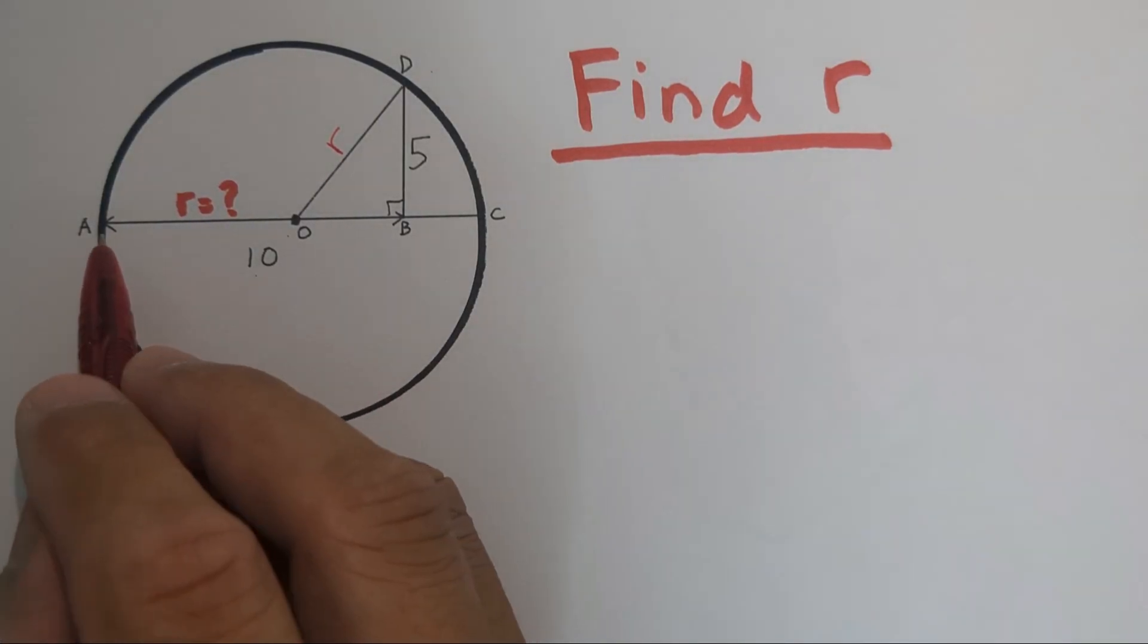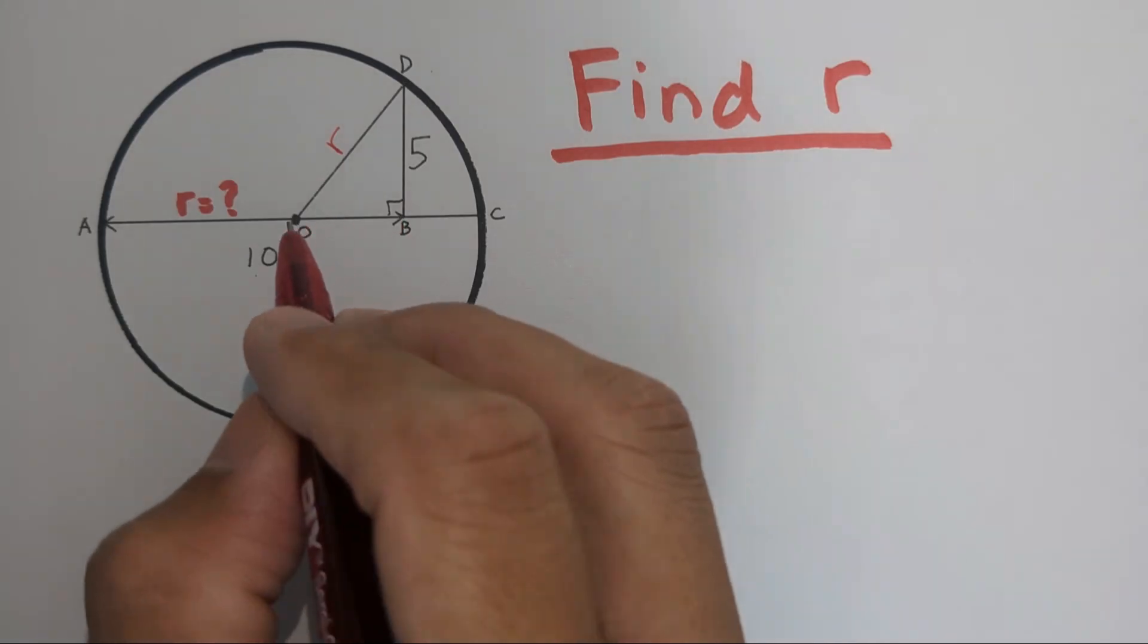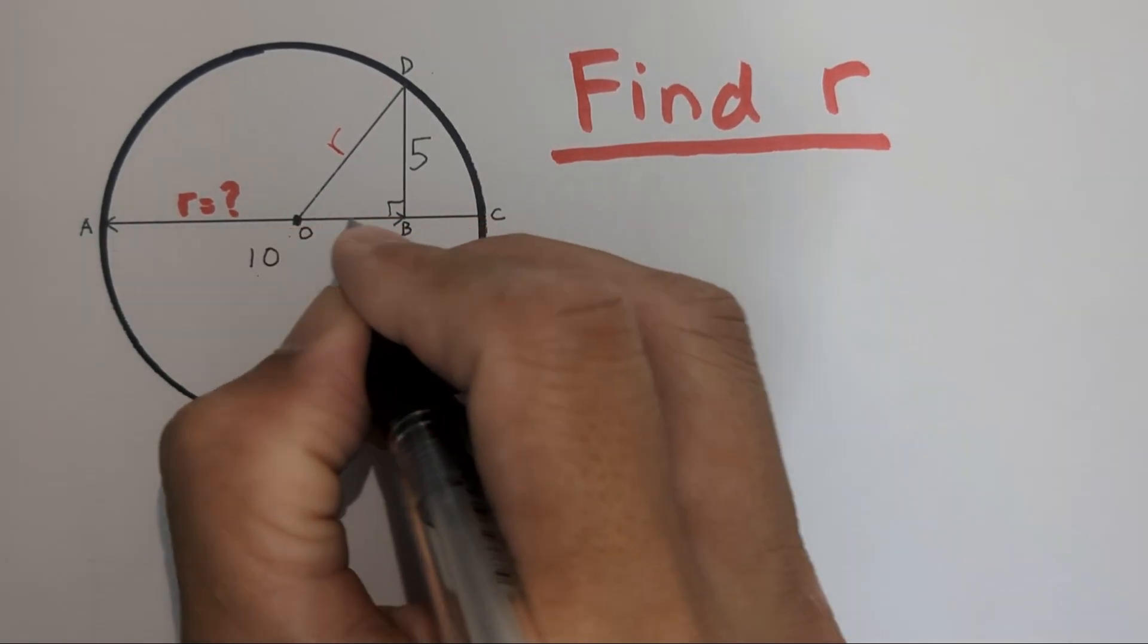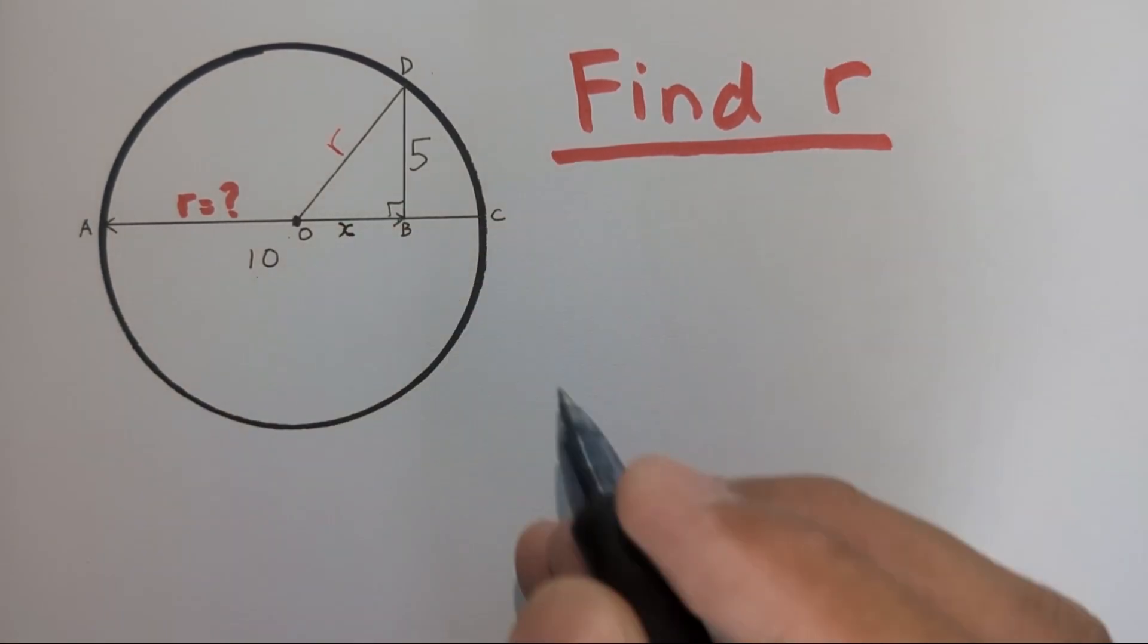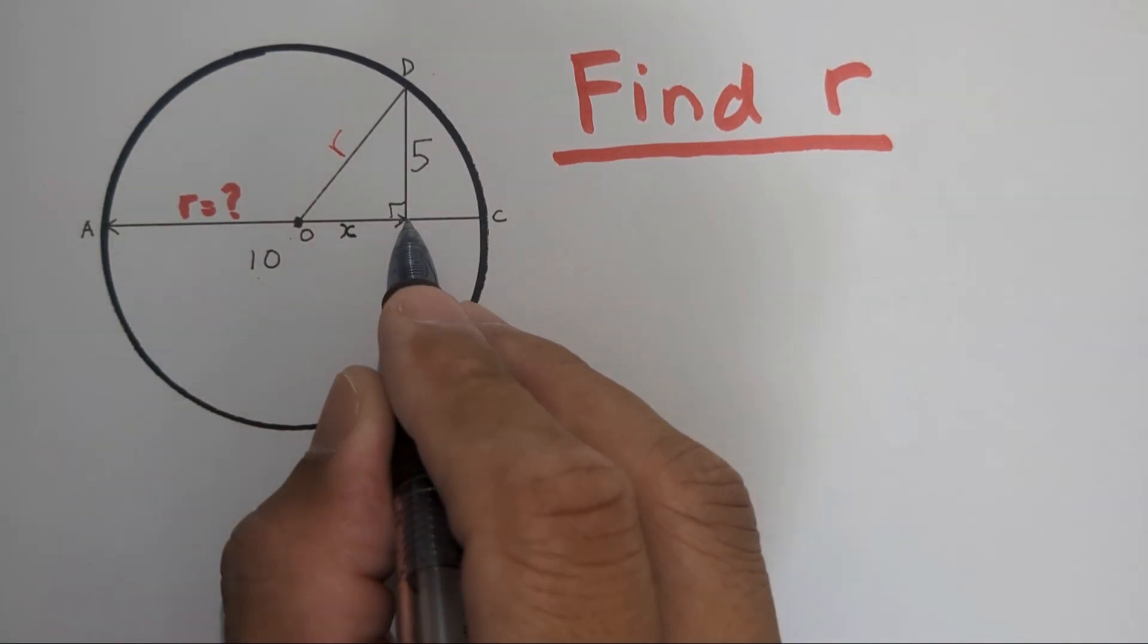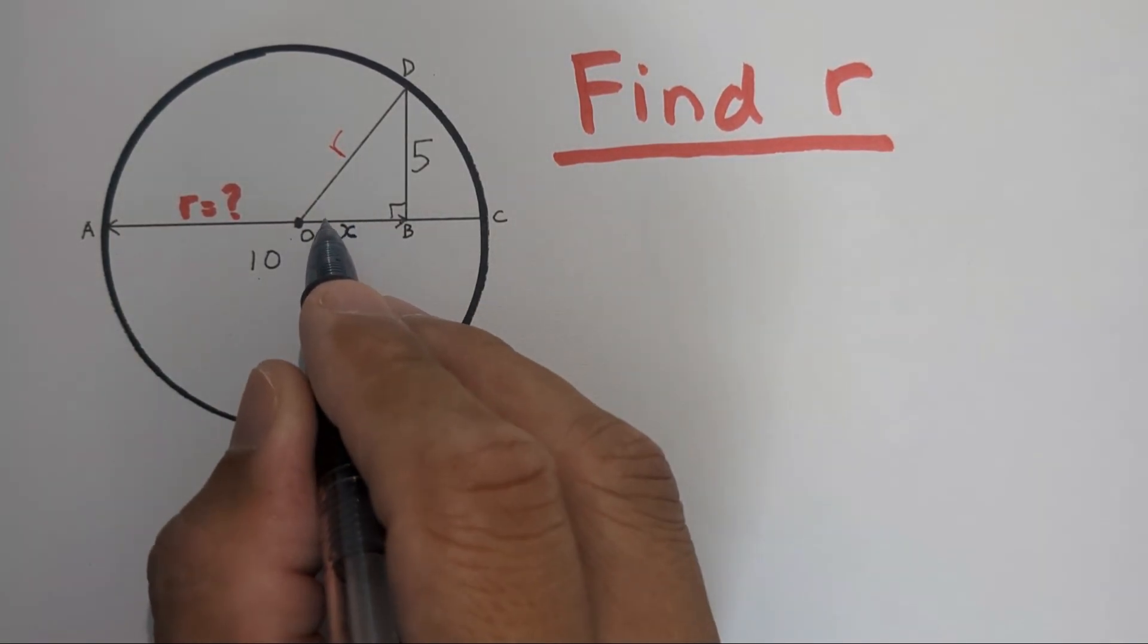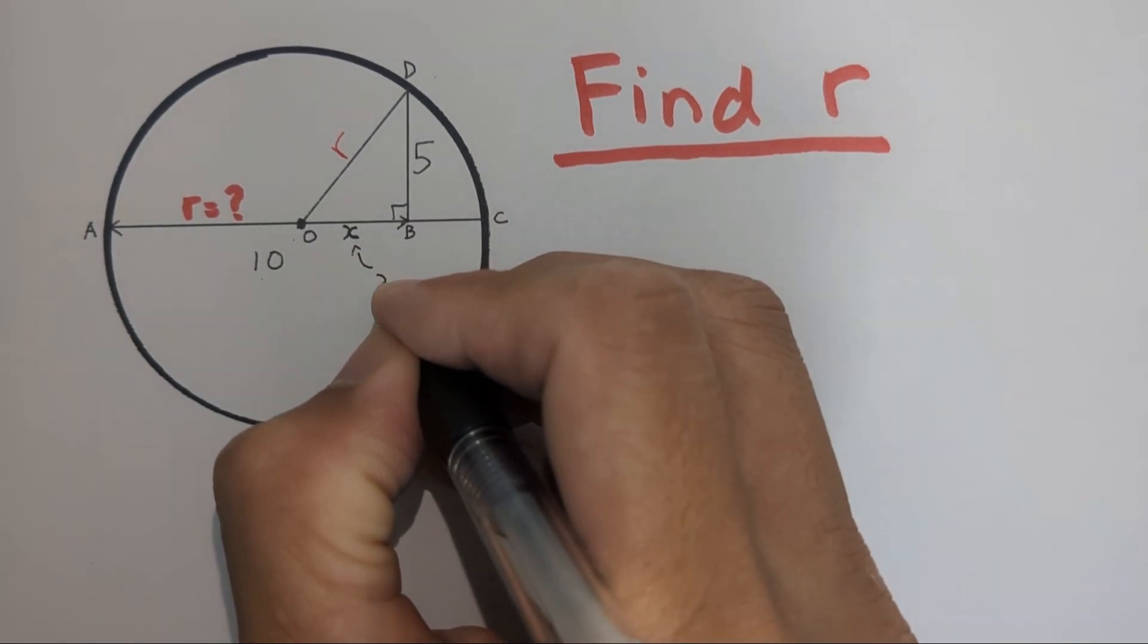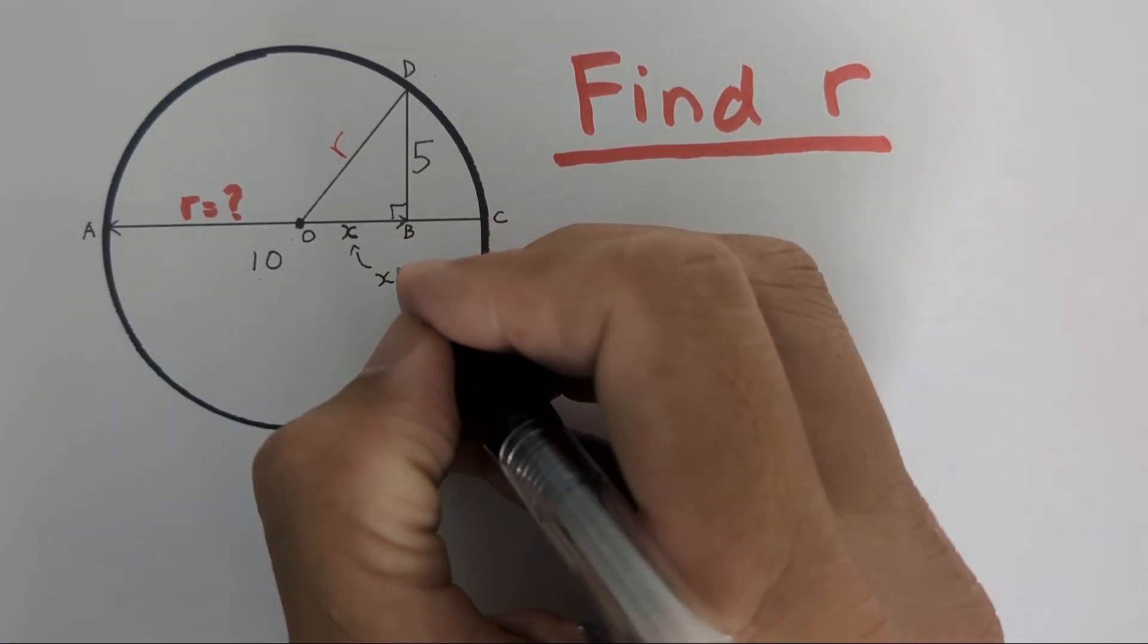We have AB is 10. We don't know OB. Let's use X to represent OB. What we know is, 10 minus R equals X. So X equals 10 minus R.